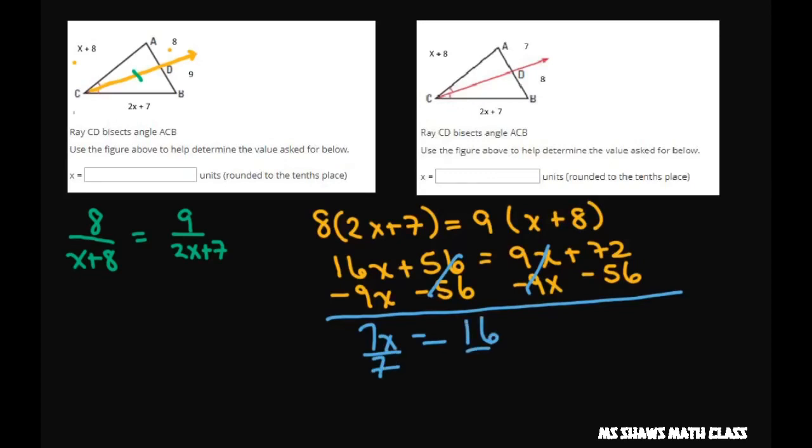Divide both sides by 7, and we're going to round to the nearest tenth place. So x equals 16 divided by 7, and that gives you 2.29. If that's in the hundredths place, we're going to round that up to 2.3, so x is 2.3 units. Now you try the second one and pause the video and see if you can do it the same way.